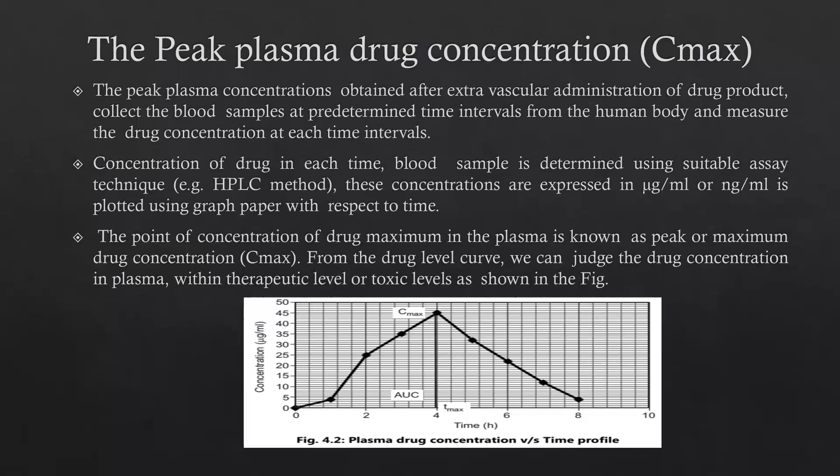The concentration of the drug in each blood sample is determined using a suitable analytical technique, for example the HPLC method. The concentrations are expressed in microgram per mL or nanogram per mL and plotted on graph paper with respect to time.